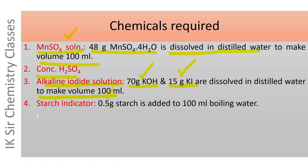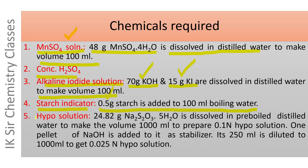The fourth chemical is starch indicator, prepared by adding 0.5 grams of starch in 100 ml boiling water. And the last one is hypo solution. 24.82 grams Na₂S₂O₃·5H₂O — that is sodium thiosulphate pentahydrate — is dissolved in pre-boiled distilled water to make the volume 1000 ml, giving us 0.1 N hypo solution.